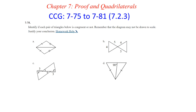Hello, welcome to Chapter 7, homework questions 75 through 81. Question 75: identify if each pair of triangles below is congruent or not. Remember that the diagram may not be drawn to scale, and then justify your conclusion.